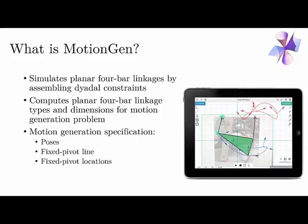So what is MotionGen — what can it do for you? The easiest thing you can do with this app is simulate planar four-bar linkages. The way this app differs from other simulation apps is that instead of drawing four bars and specifying one of the bars to be the fixed one, you essentially assemble diagonal constraints of planar four-bar linkages. Every four-bar has two diagonal constraints; you draw those constraints, which are a simple geometric shape, and you have a four-bar linkage.